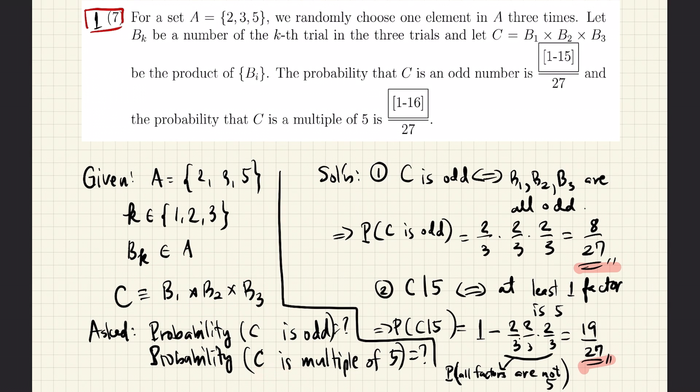For the second problem, it is easier to actually think about the case when C is not a multiple of 5, because if we know the probability that C is not a multiple of 5, then the probability that C is in fact a multiple of 5 can be obtained by subtracting the probability that C is not a multiple of 5 from 1.